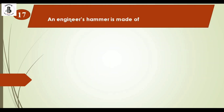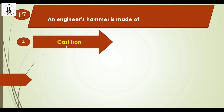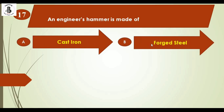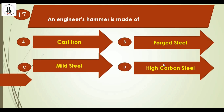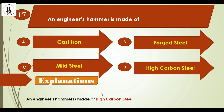An engineer's hammer is made of: option A cast iron, option B forged steel, option C mild steel, and option D high carbon steel. An engineer's hammer is made with high carbon steel. The right answer is option D, high carbon steel.